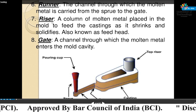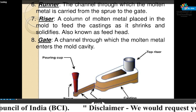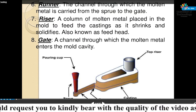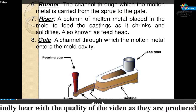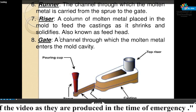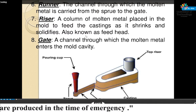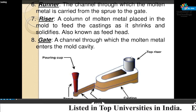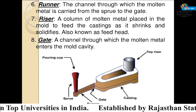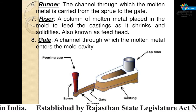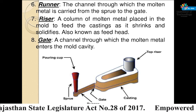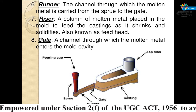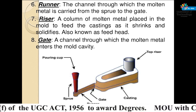Riser — a column of molten metal placed in the mold to feed the casting as it shrinks and solidifies, also known as feed head. The riser is a reservoir of molten metal used to compensate for shrinkage of the product during solidification.